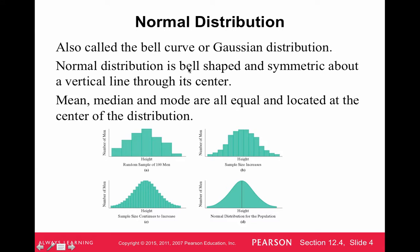The normal distribution is bell-shaped and symmetric about the vertical line through its center. The mean, median, and mode are all equal and are located at the center of the distribution. There are a lot of real-life examples that are bell-shaped. If we look at heights within a certain sex in a certain country, they're going to be very bell-shaped.